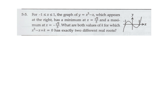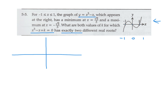For x between negative 1 and 1, the graph of y equals x cubed minus x has a minimum at x equals root 3 over 3 and a maximum at negative root 3 over 3. What are the values of k for which x cubed minus x plus k equals 0 has exactly two different real roots? This graph currently has three roots: negative 1, 0, and 1. The only difference in the new equation is the k, which shifts the graph up or down.